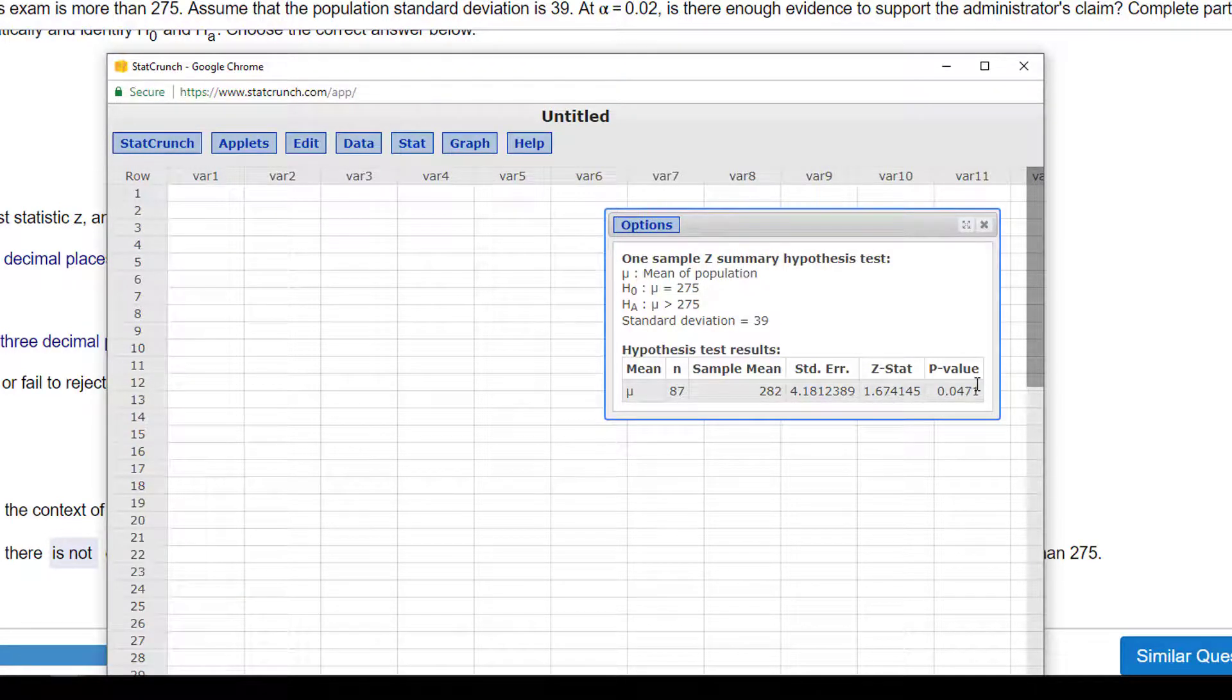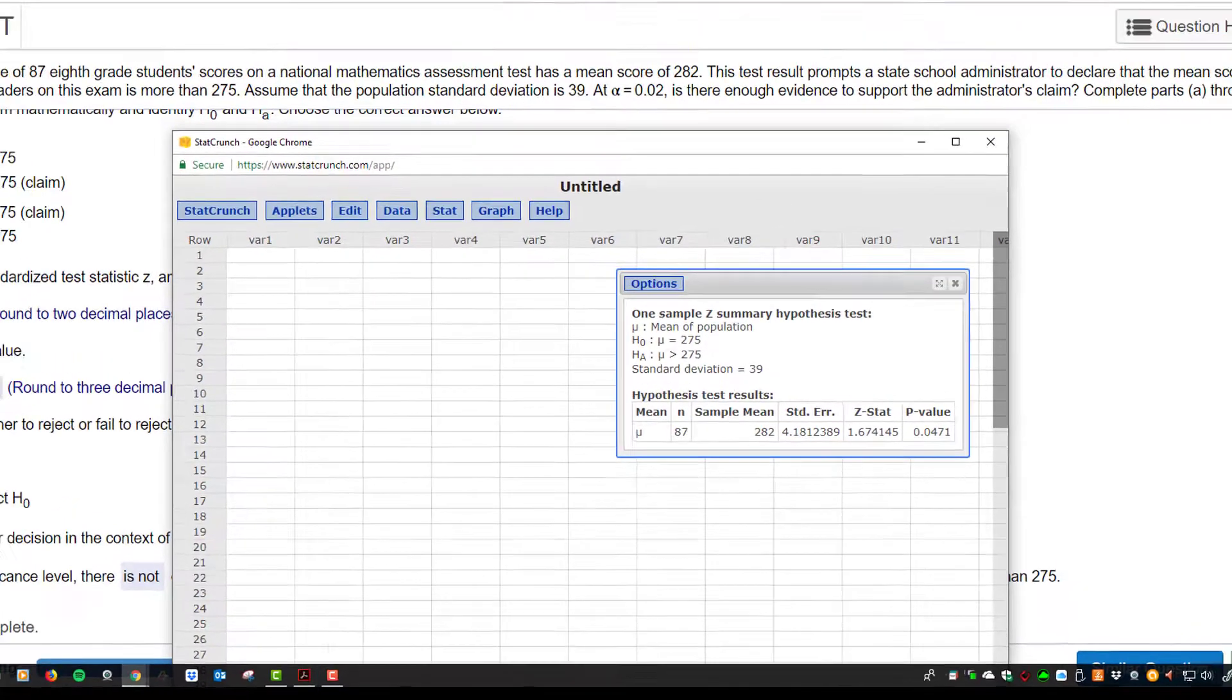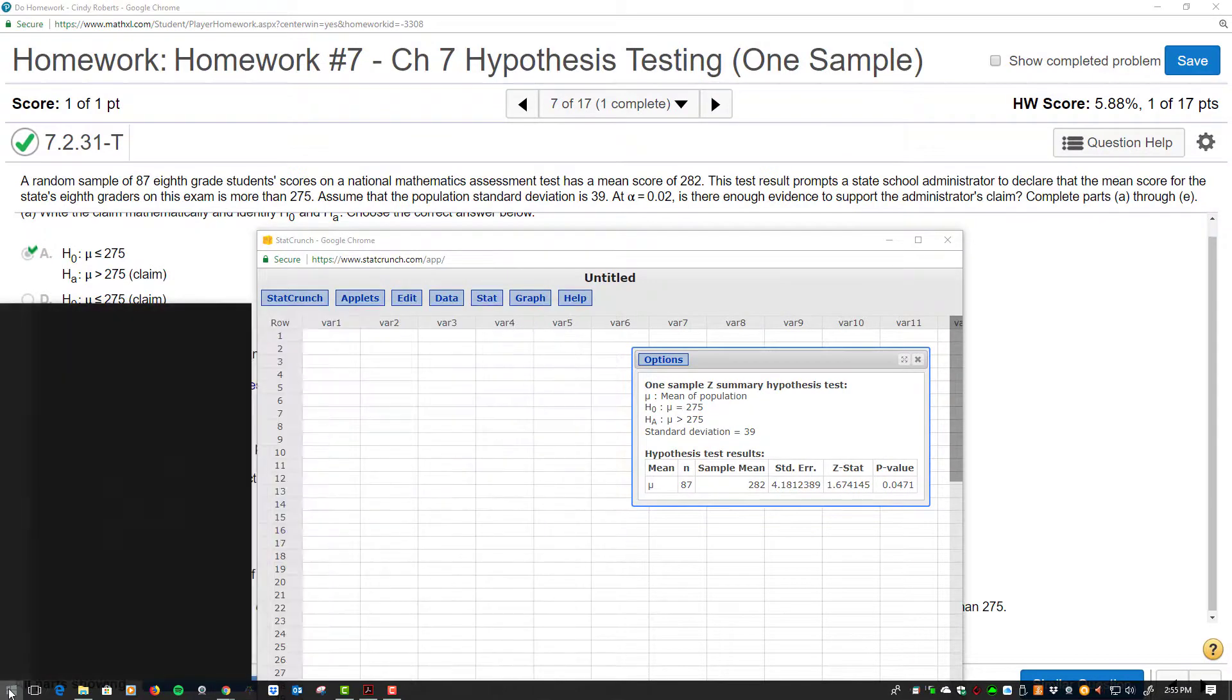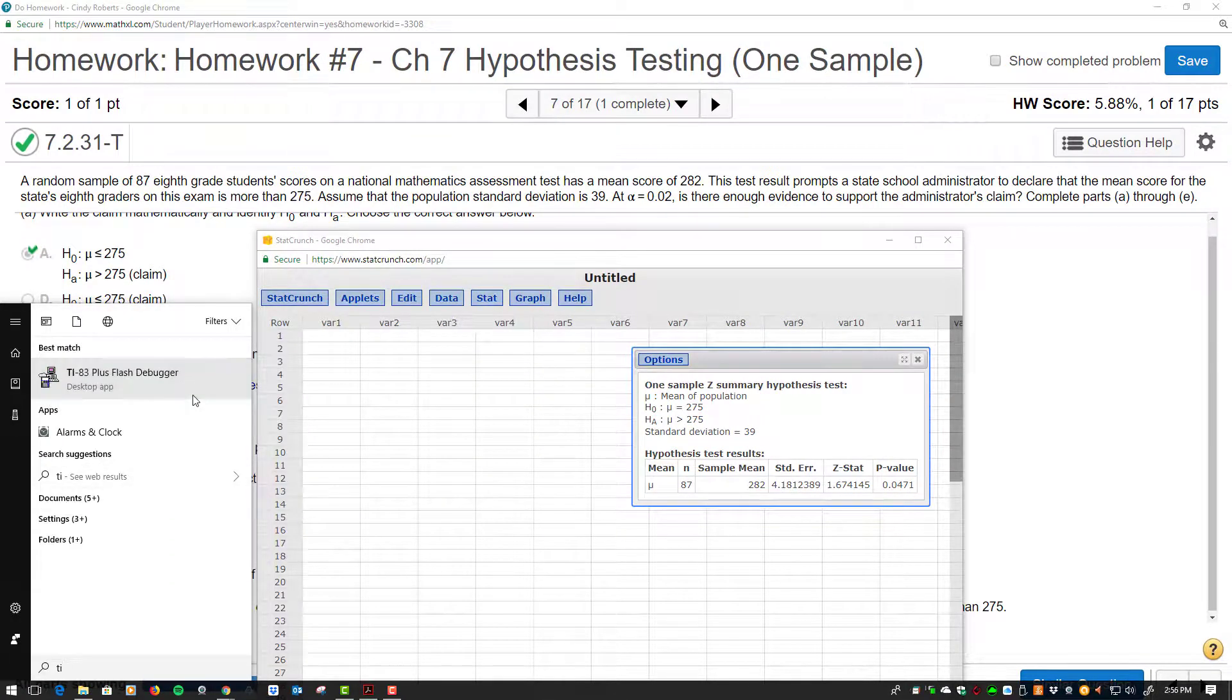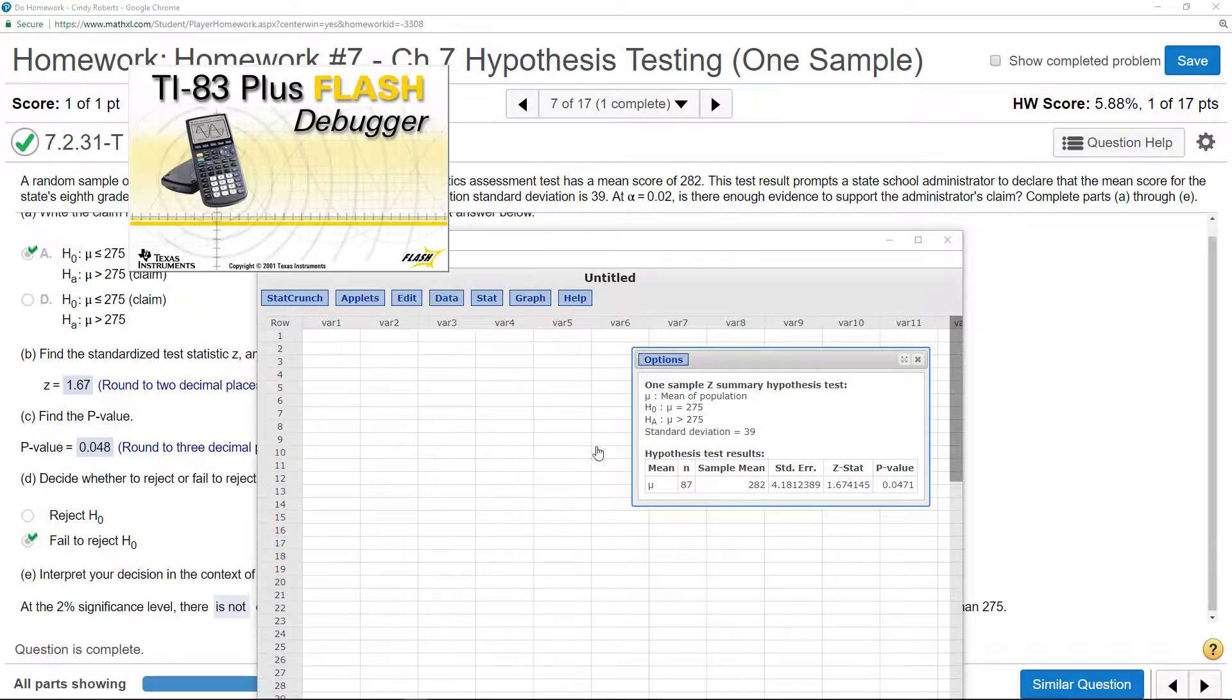And I hit Compute. And I get the 1.67. And I also get, which this is a little off, but they're probably doing this whole z-value. I get the 0.0471. And then, I can also do this with a calculator.